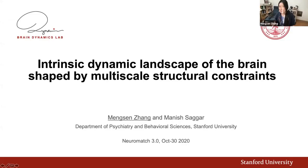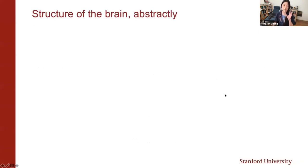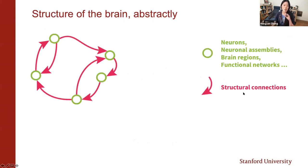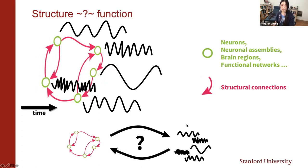Thank you so much for the introduction. As Megan mentioned, I will talk about how the intrinsic dynamic landscape of the brain is shaped by structure. When I think about the structure of the brain, I think a little bit more abstractly — a bunch of nodes connected by arrows that are the structural constraints. These nodes could be neurons, brain regions, or even functional networks, represented at multiple scales. A fundamental question is how these structures are connected to the brain's dynamics, and today I will primarily be talking about how the structure of the brain constrains its function.